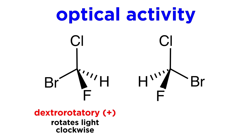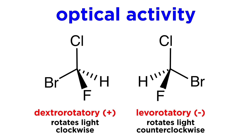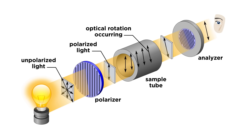One will be dextrorotatory, signified with a plus sign, meaning the rotation is clockwise, and the other will be levorotatory, signified with a minus sign, meaning the rotation is counterclockwise.